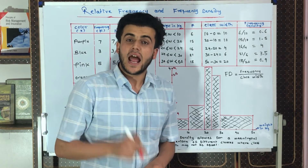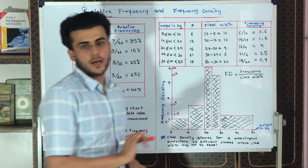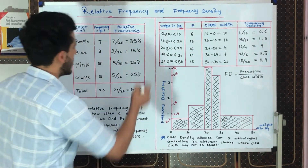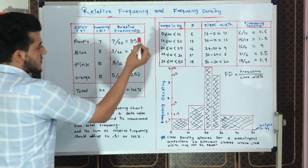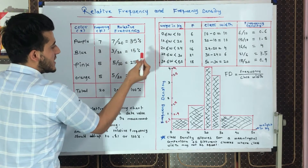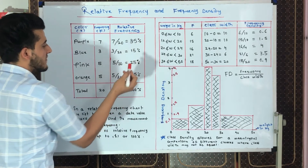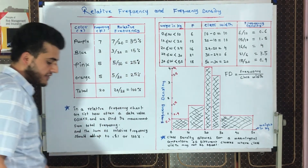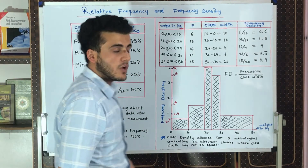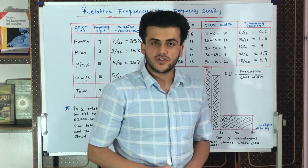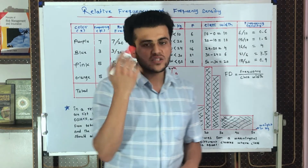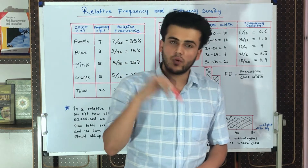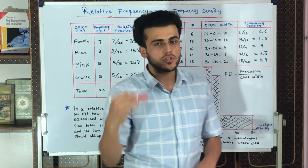The sum of relative frequencies should add up to 1 or 100%. For example, 35 plus 15 plus 25 plus 25 equals 100%, and since 1 is equal to 100%, both representations are valid.